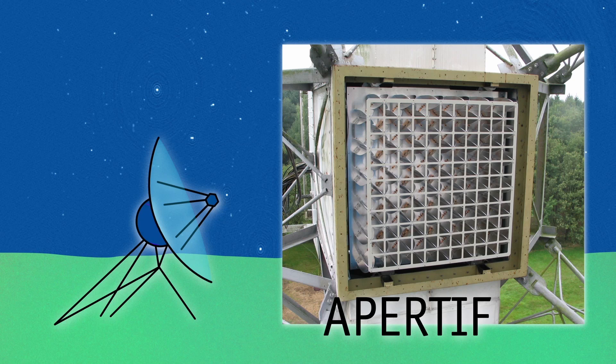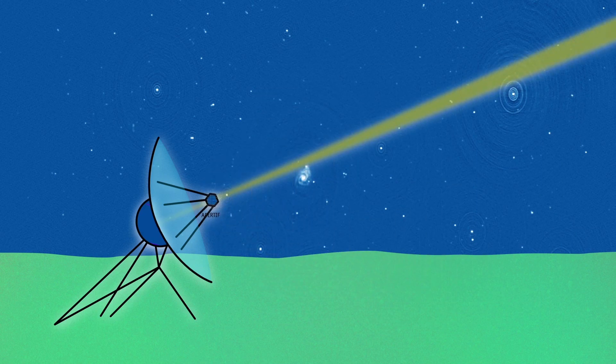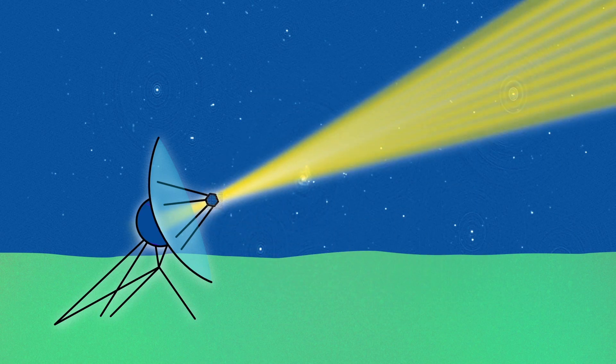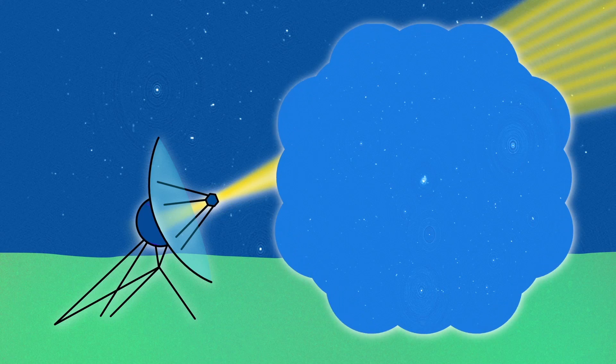In each dish, we installed an array of 121 antennas, which allows the dish to form 40 beams instead of the previous one beam. So now, the Westerbork telescope has a much larger field of view, allowing us to map a larger part of the sky.